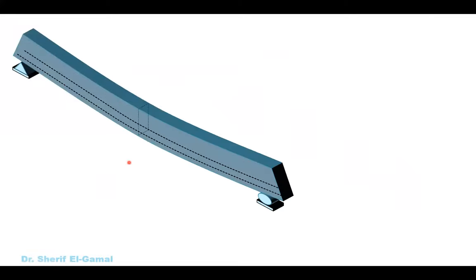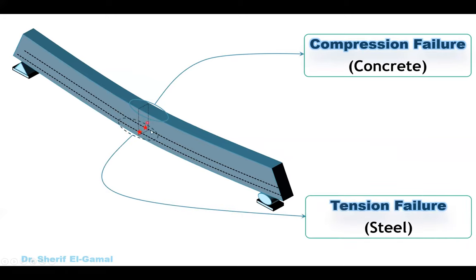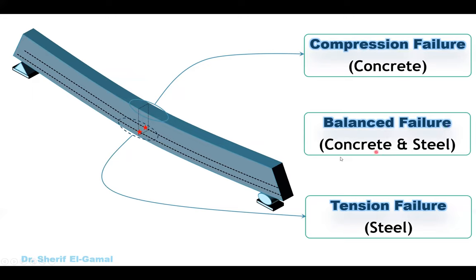For such beams, there are three different types of failures at mid-span. The first one: if we have a failure in the concrete at the top surface of the middle section, we call this compression failure — it occurs in the concrete side where we have compression forces. On the opposite side, if we have tension failure, it means a failure in the steel bars. Or we may have something called balanced failure, where the concrete and the steel reach their ultimate strength at the same time.